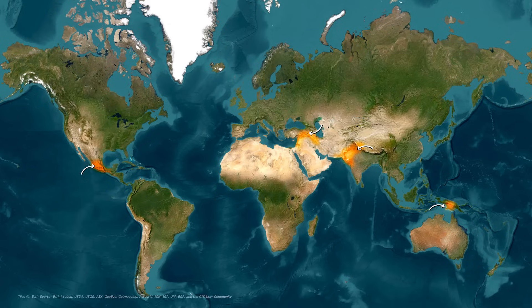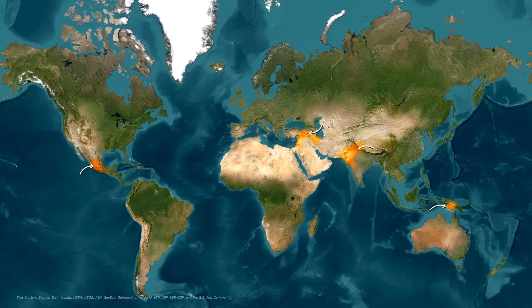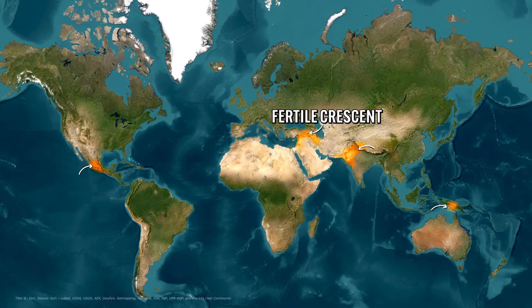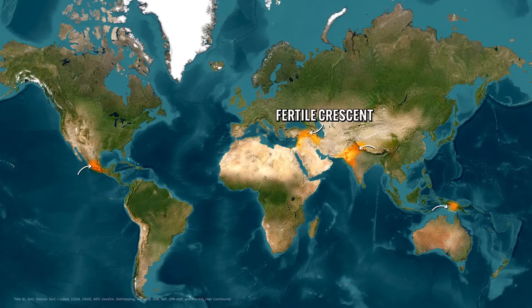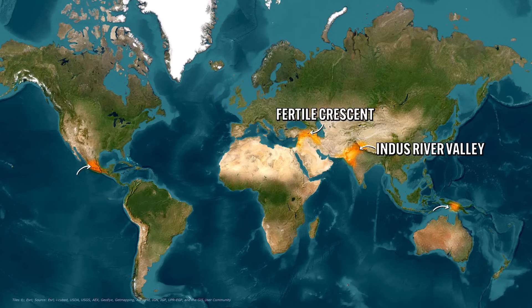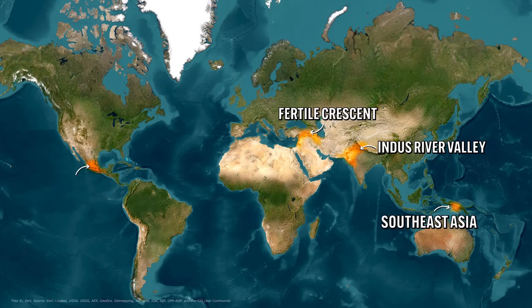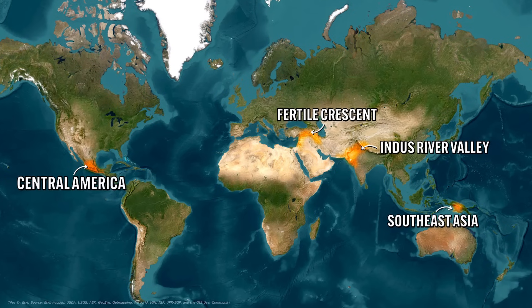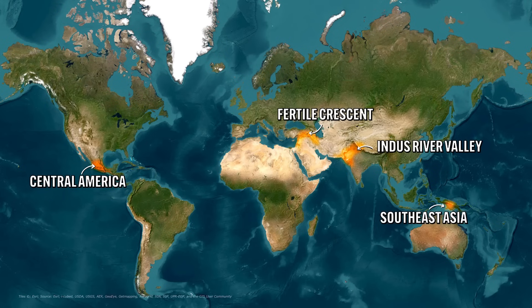Here you can see the four main hearths of agriculture: one in the Fertile Crescent, one over here in the Indus River Valley, one over here in Southeast Asia, and finally one over here in Central America. You're going to need to be somewhat familiar with the various kinds of domestication practiced in each of these hearths, but first just take a second and look at this map again.